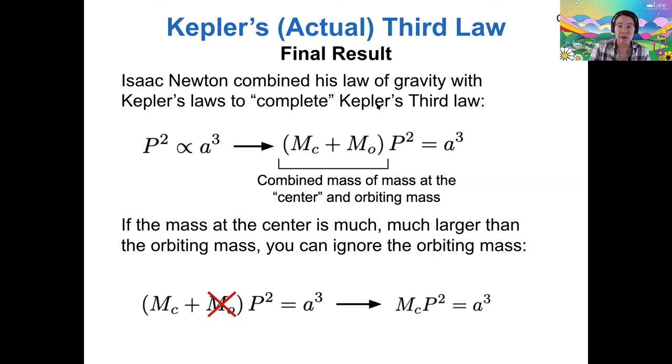And so that makes our final equation even simpler and means that we can find the mass of an object at the center of an orbit just by knowing the semi-major axis and the orbital period of any one object orbiting around it.